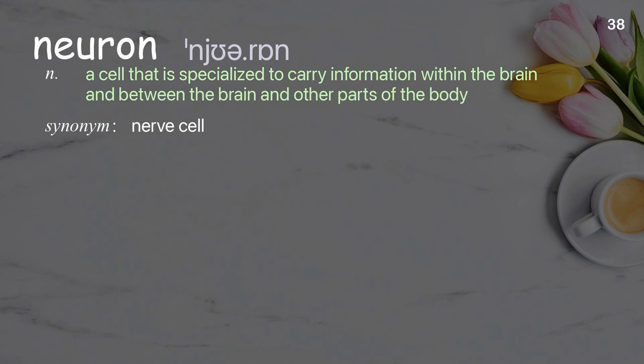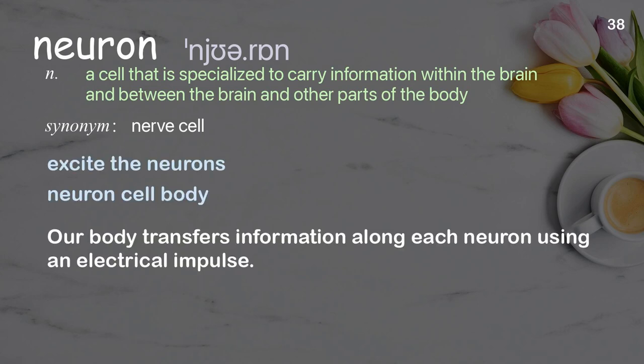Neuron. A cell that is specialized to carry information within the brain and between the brain and other parts of the body. Examples: excite the neurons, neuron cell body. Our body transfers information along each neuron using an electrical impulse.